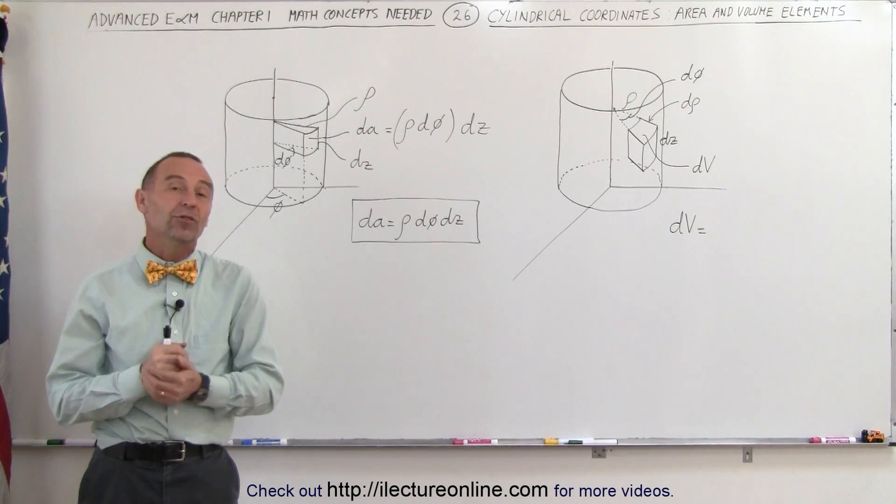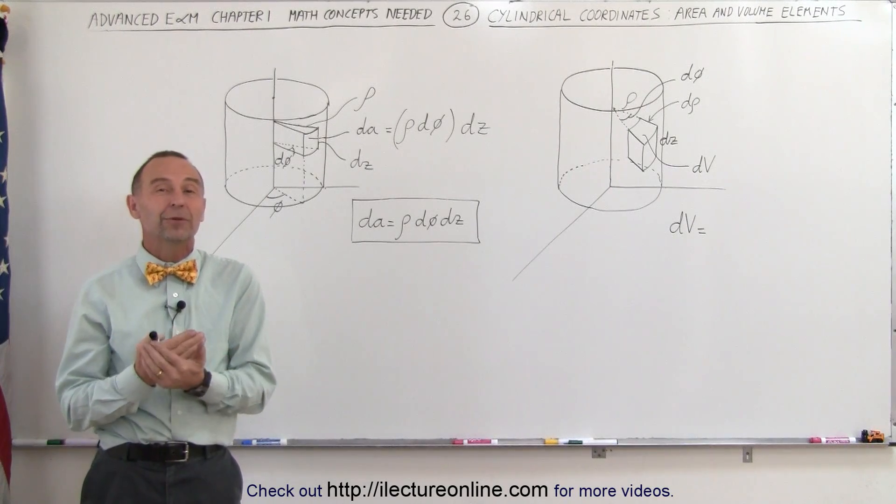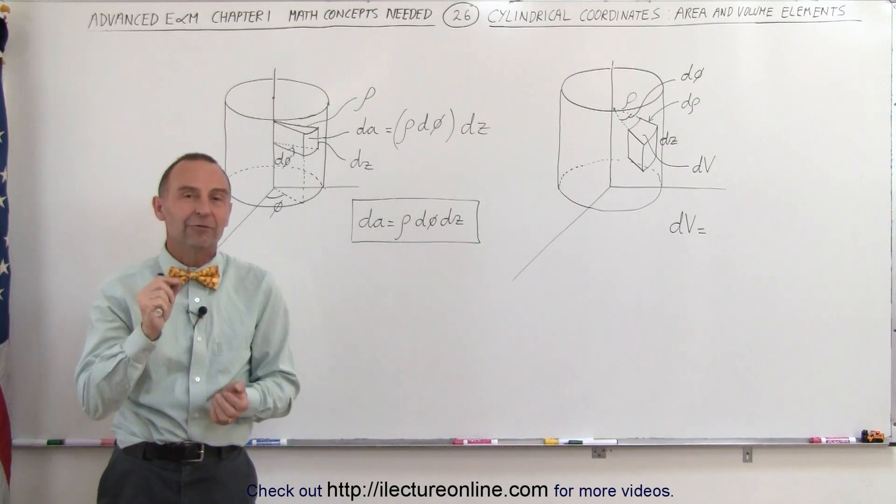Welcome to ElectronLine. When using cylindrical coordinates, we need to be able to find an area element and a volume element.